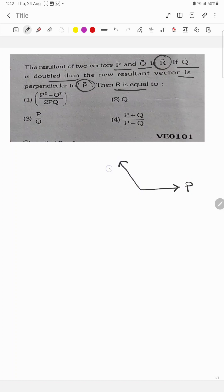This is P, this was Q, and this is the resultant. Now if Q is doubled, then the new resultant vector is perpendicular to P. So this is perpendicular, R' is the new resultant, and this is 2Q.